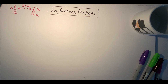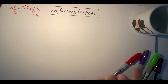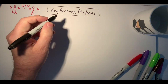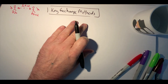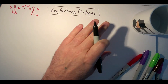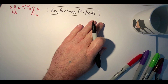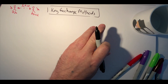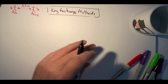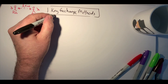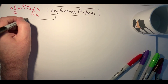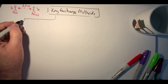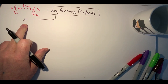The basic methods that we have include the Diffie-Hellman method and the elliptic curve Diffie-Hellman method, along with public key exchange. But first we'll look at some of the issues related to key exchange methods.